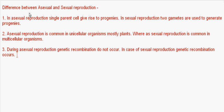One more point: asexual reproduction occurs in all cells of an individual, whereas sexual reproduction involves only the gametes produced by the sexually related organs — for example, the male and female reproductive organs.